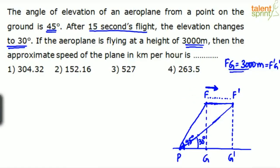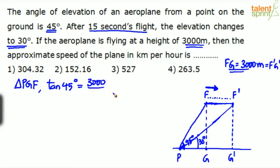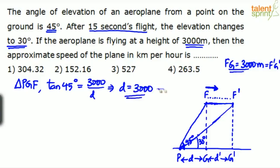We have two triangles — find out the answer. Consider triangle PGF. Tan 45 equals FG divided by PG. FG is 3000 and PG is D. So tan 45 = 3000/D, which gives D equals 3000, because tan 45 is 1. This is equation number one.